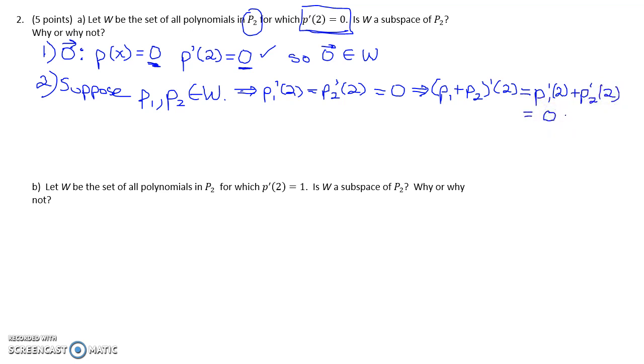So P1 plus P2 prime is equal to P1 prime plus P2 prime evaluated at 2. Since P1 is in W, then the derivative at 2 is 0. Since P2 is in W, the derivative at 2 is 0. And so the derivative of the sum at 2 is 0. So this shows that P1 plus P2 then would also be an element of W, because the derivative at 2 is 0.